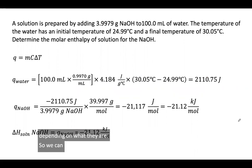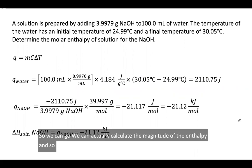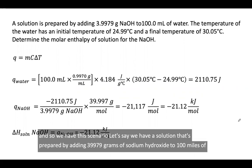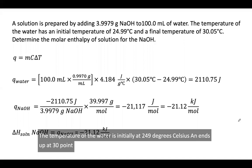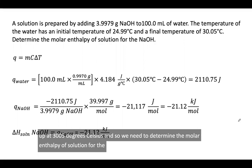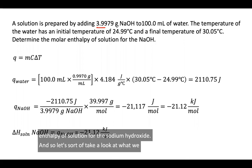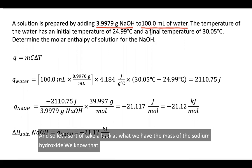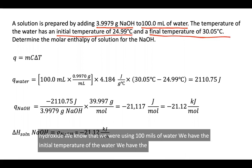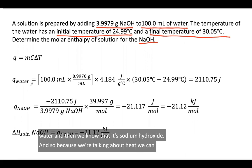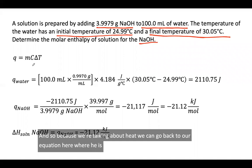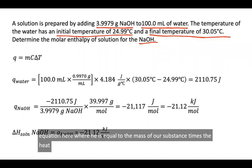Now we can actually calculate the magnitude of the enthalpy. We have a solution prepared by adding 3.9979 grams of sodium hydroxide to 100 mL of water. The temperature of the water is initially 24.99°C and ends up at 30.05°C. We need to determine the molar enthalpy of solution for sodium hydroxide. We have the mass of sodium hydroxide, 100 mL of water, the initial and final temperatures, and we know the solute is sodium hydroxide.